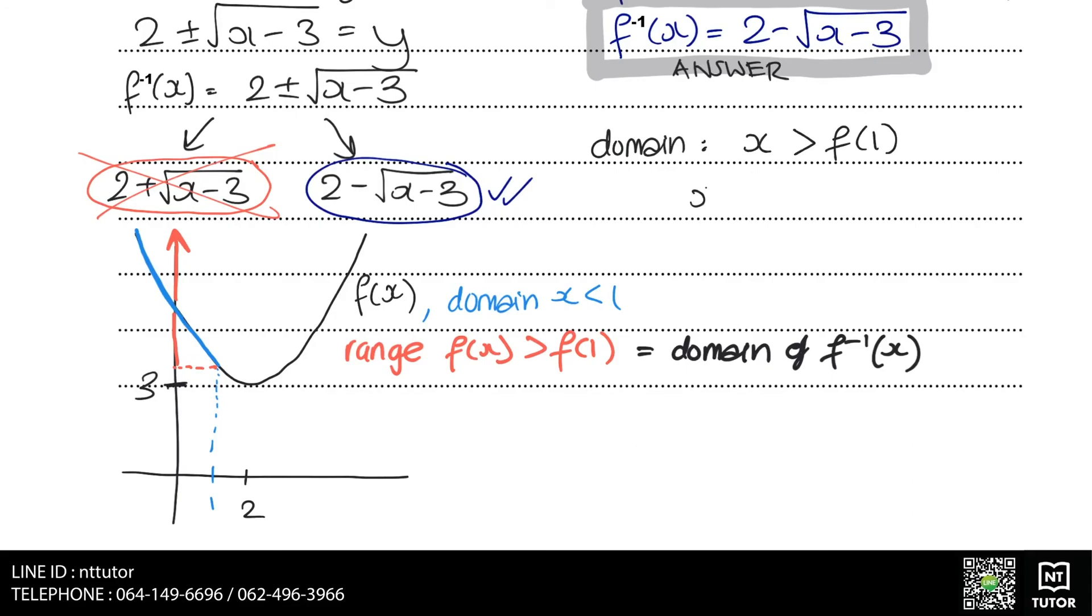To get the value of f(1), we just need to substitute 1 into the original function, and that gives us 4. This means that the domain is x greater than 4.